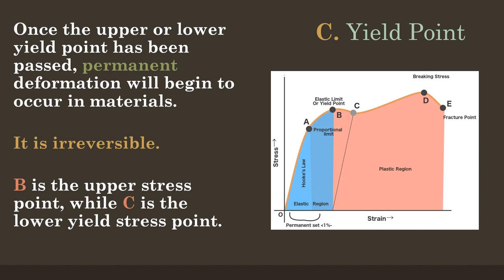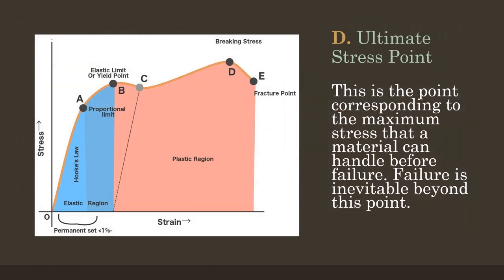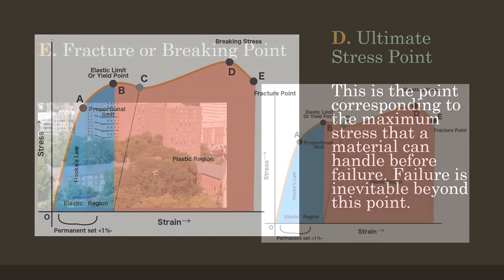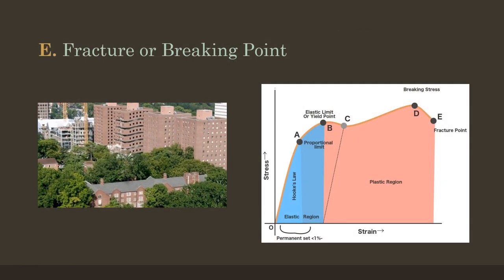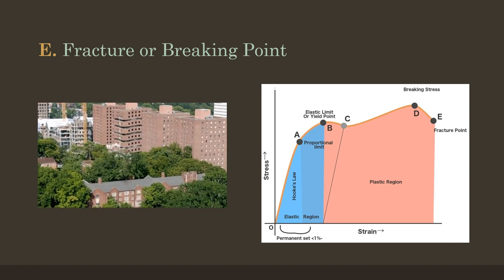Moving over to point C, which is the yield point. Once the upper or lower yield point has been passed, permanent deformation will begin to occur in the materials. This is irreversible. B is the upper stress point, while C is the lower yield stress point. D is going to be your ultimate stress point — this is the point corresponding to the maximum stress that a material can handle before failure. Failure is inevitable beyond this point. E is the fracture or breaking point, where catastrophic failure occurs.